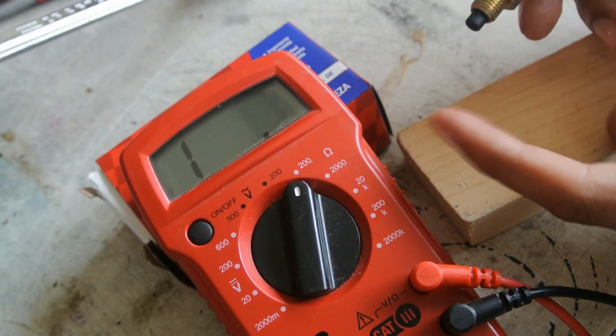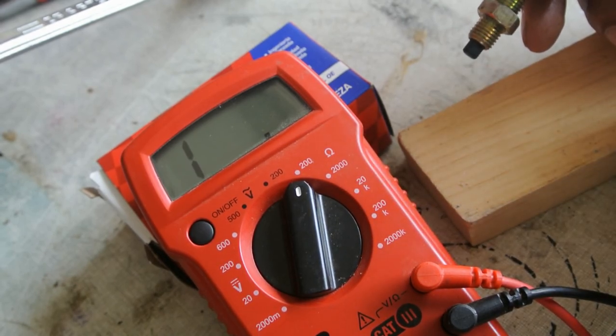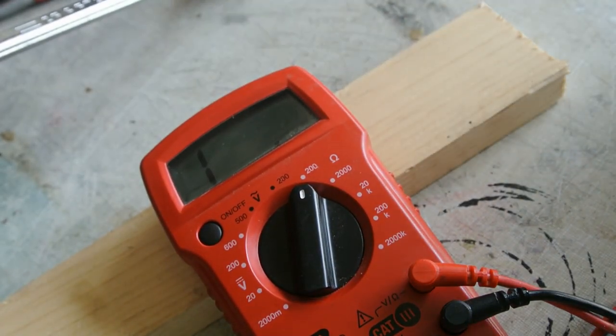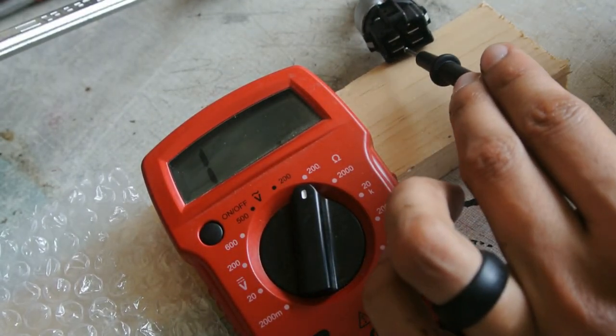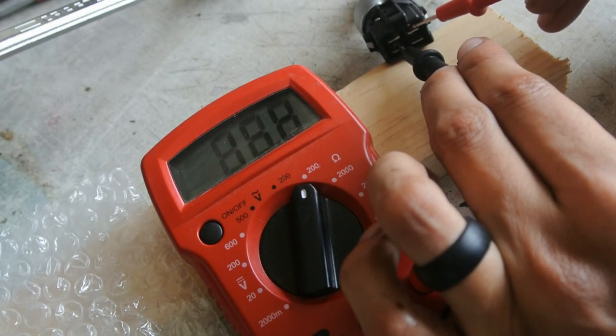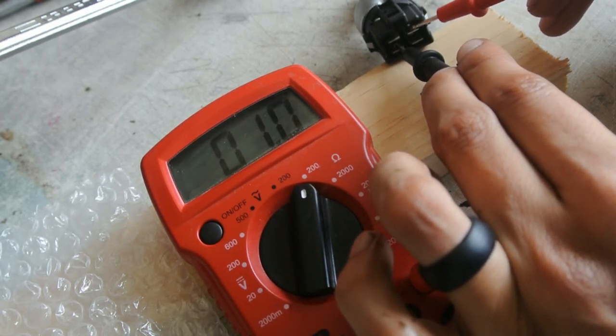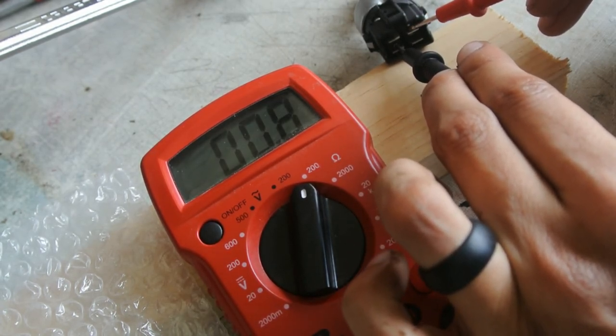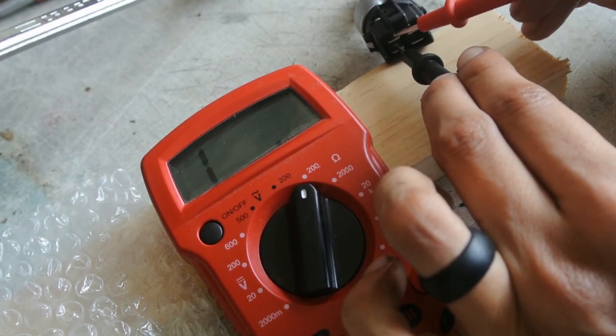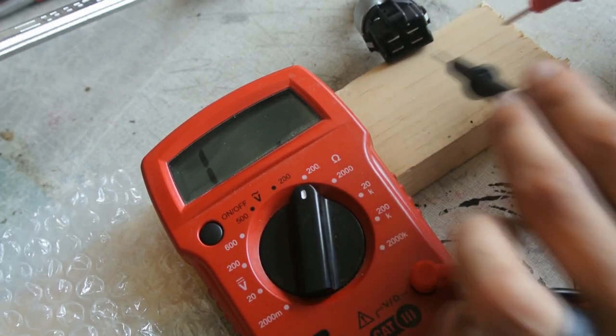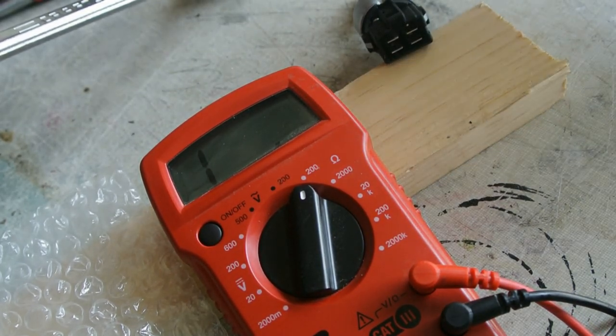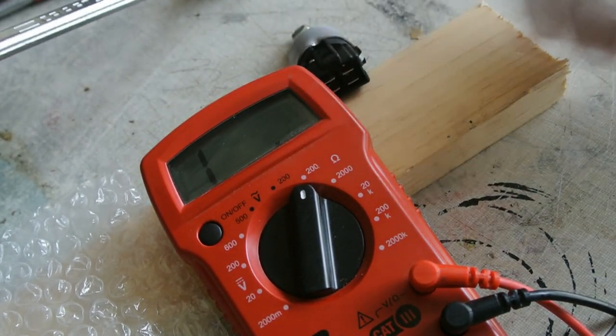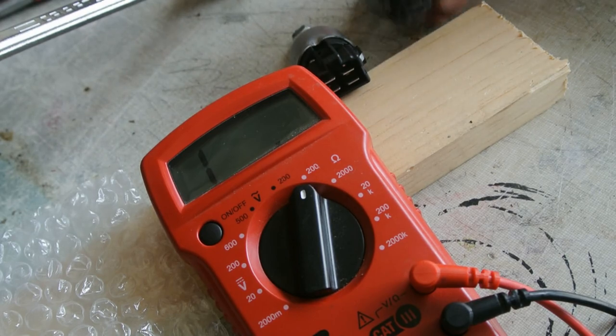So there's no continuity when the brake pedal is depressed. And as you can tell there is continuity, which means that this other switch in fact is bad.